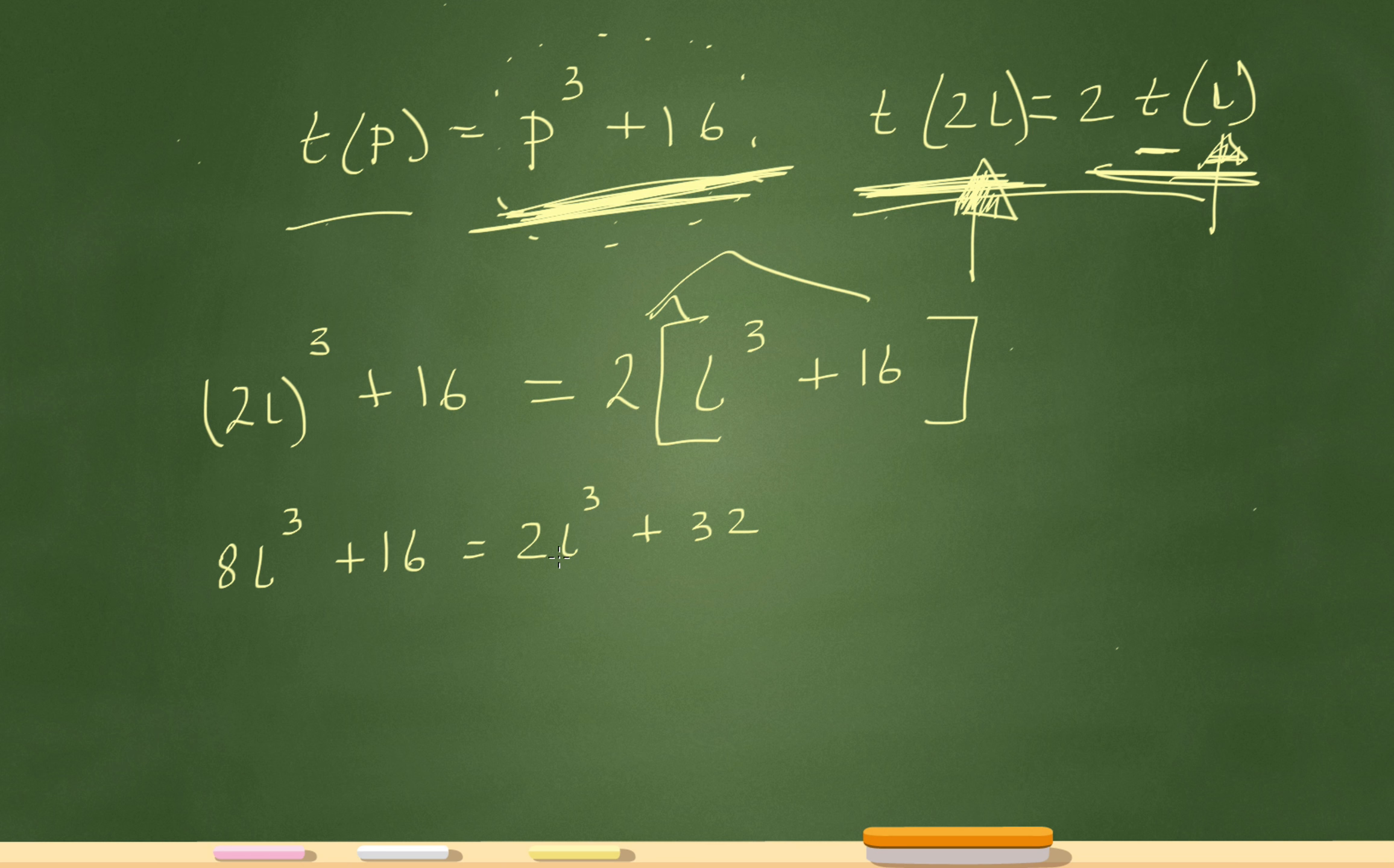Let's combine the like terms now. I'll bring this 2l cubed over here. So it'll be 8l cubed minus 2l cubed. And what I'll do is I'll bring the 16 on this side. So it'll be 32 minus 16. And now I'll just bring it up here.